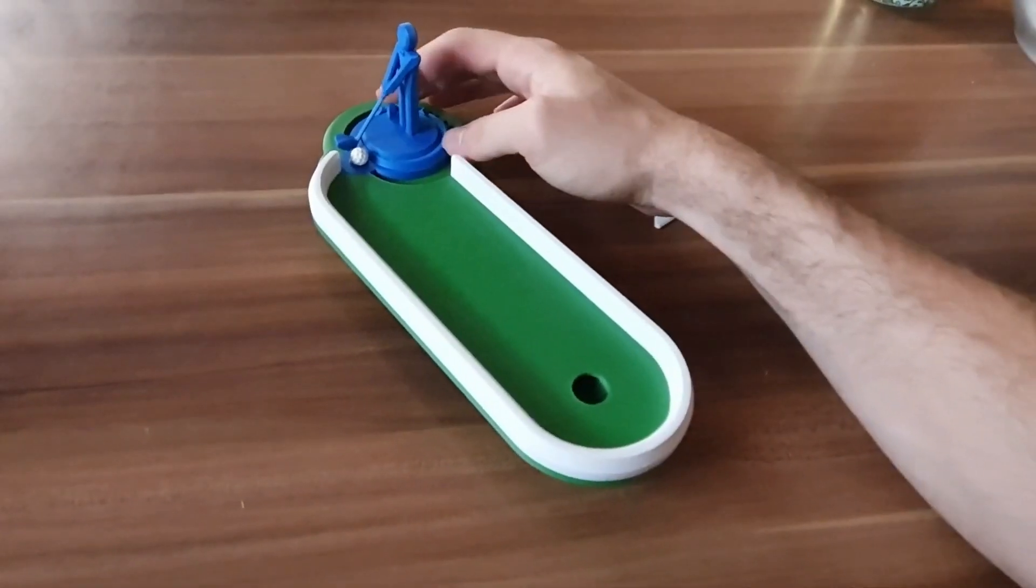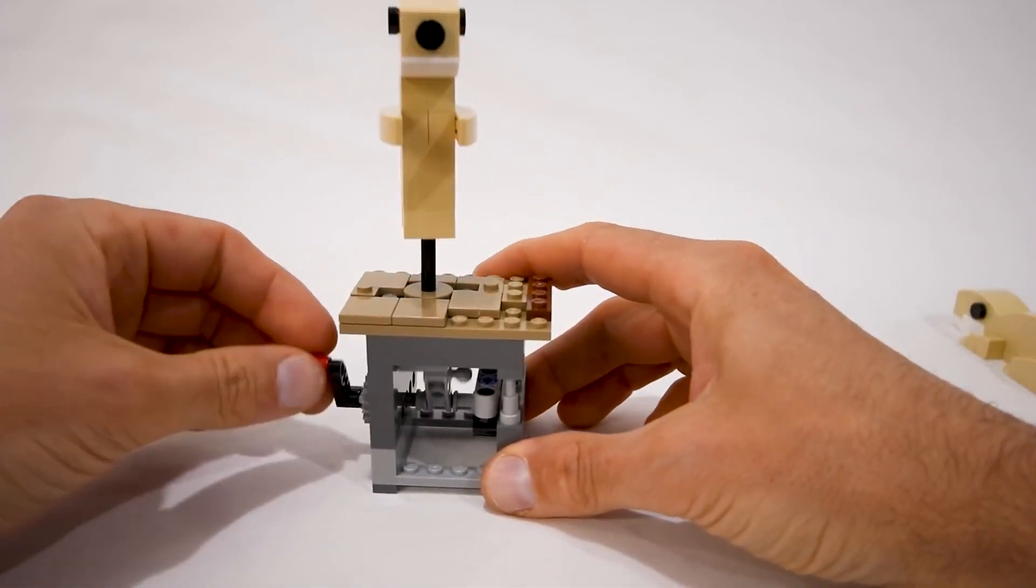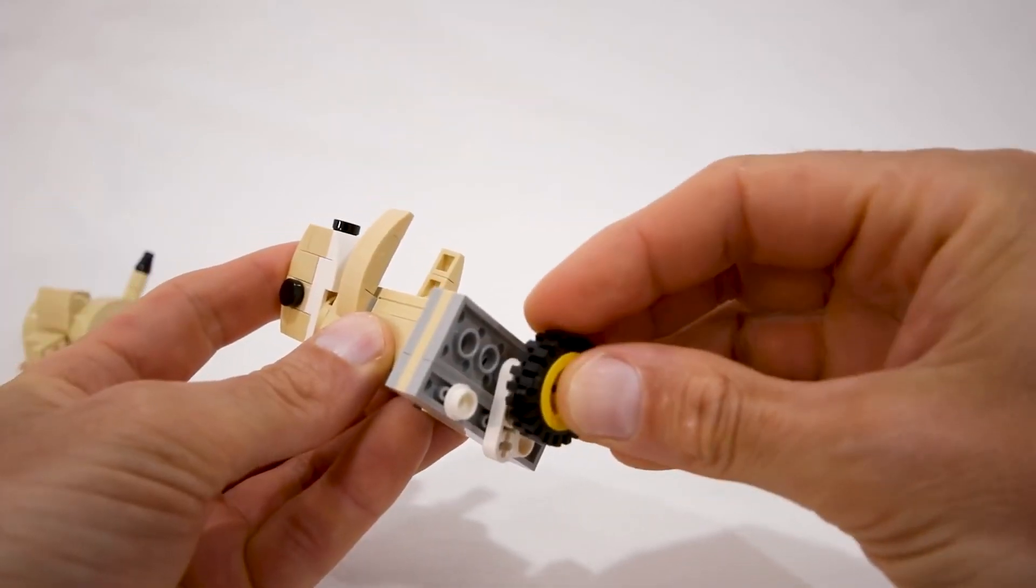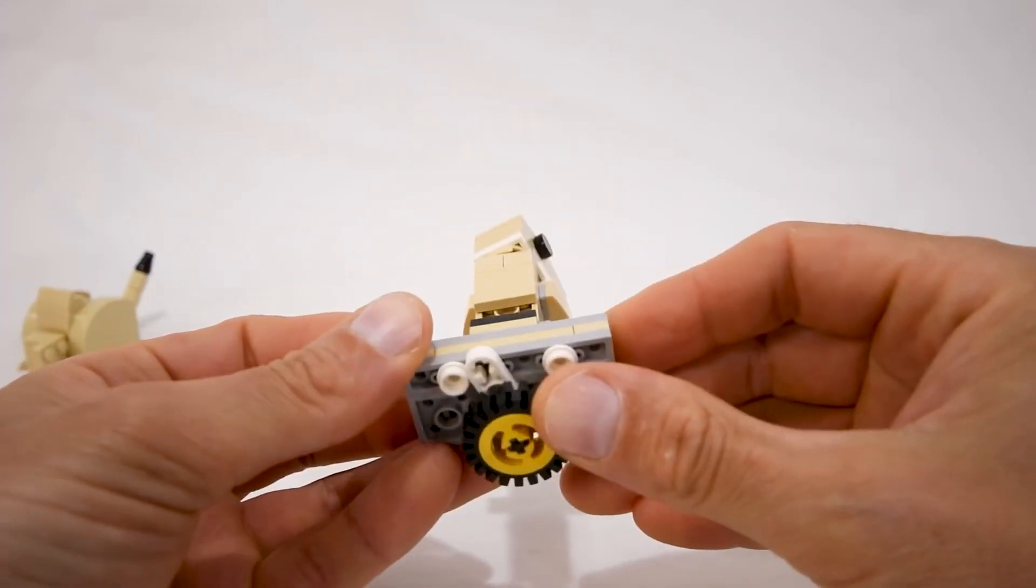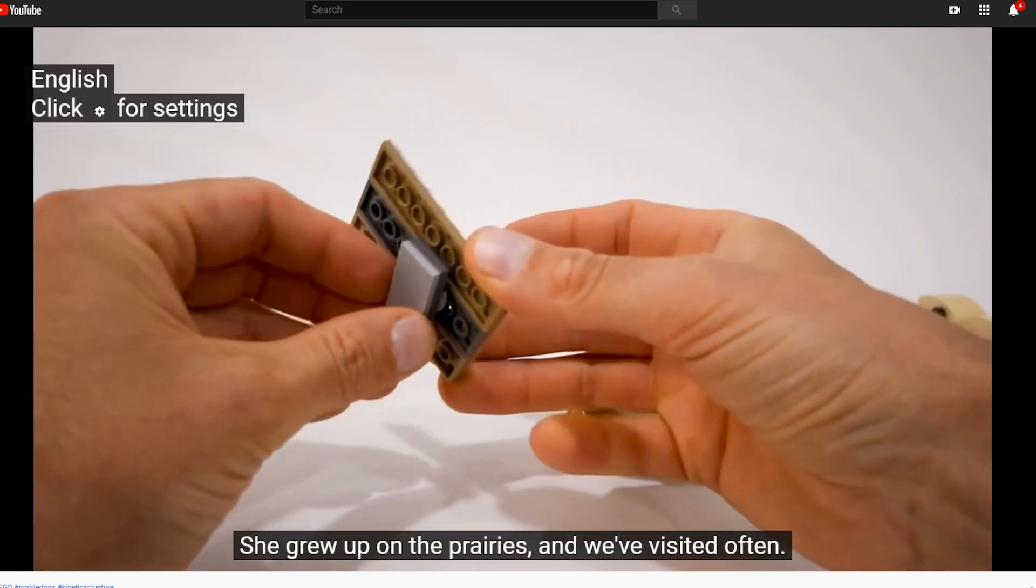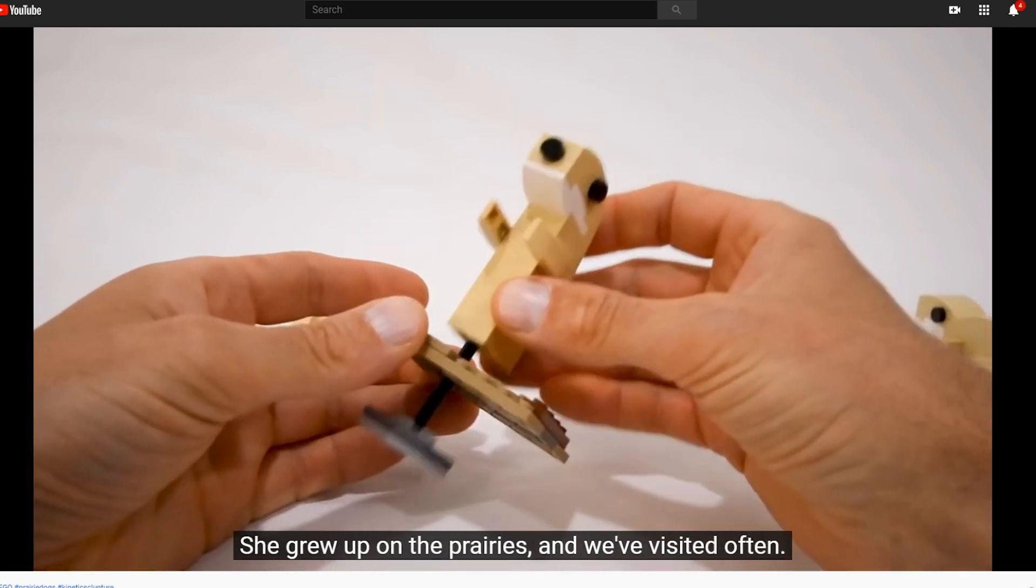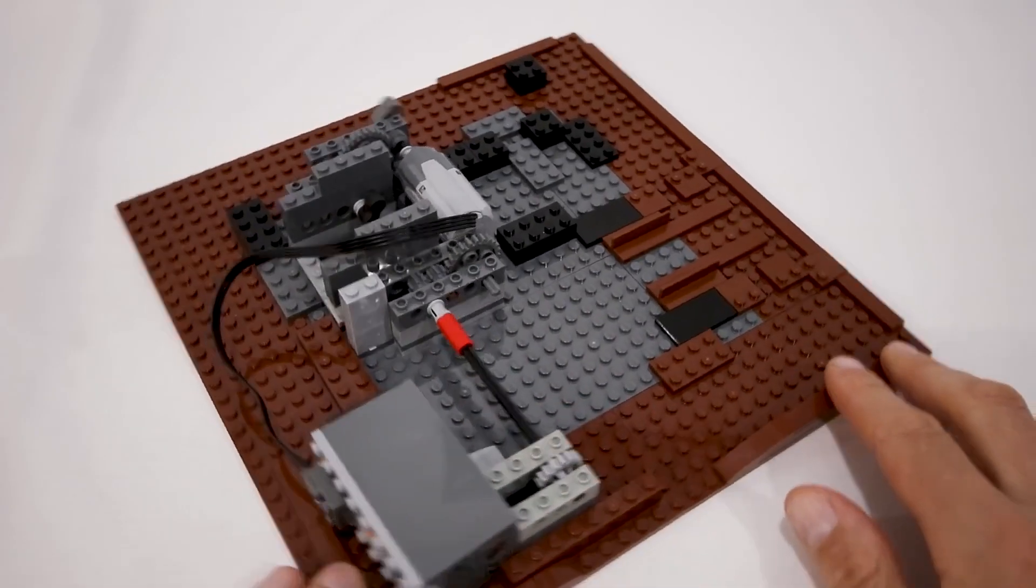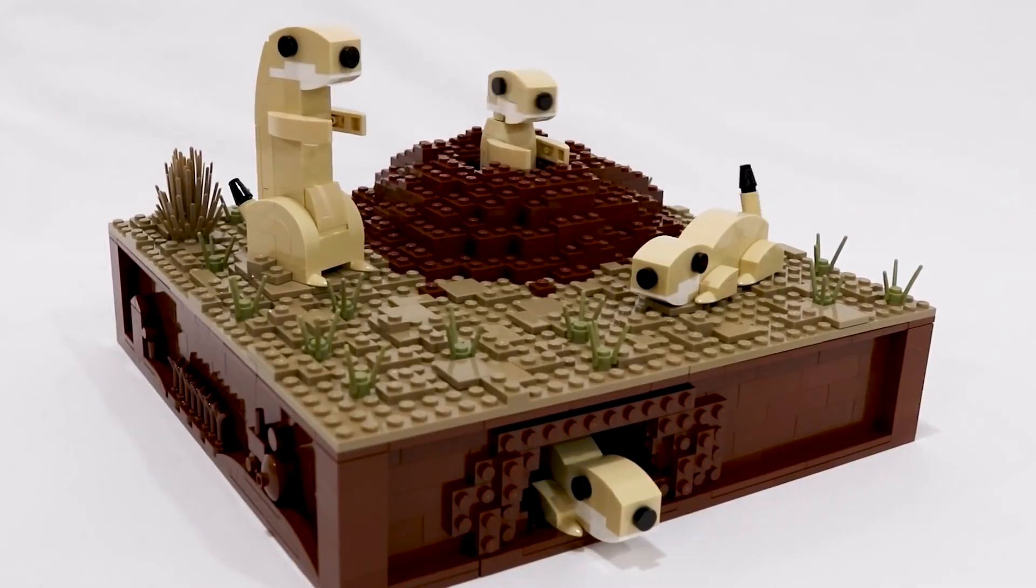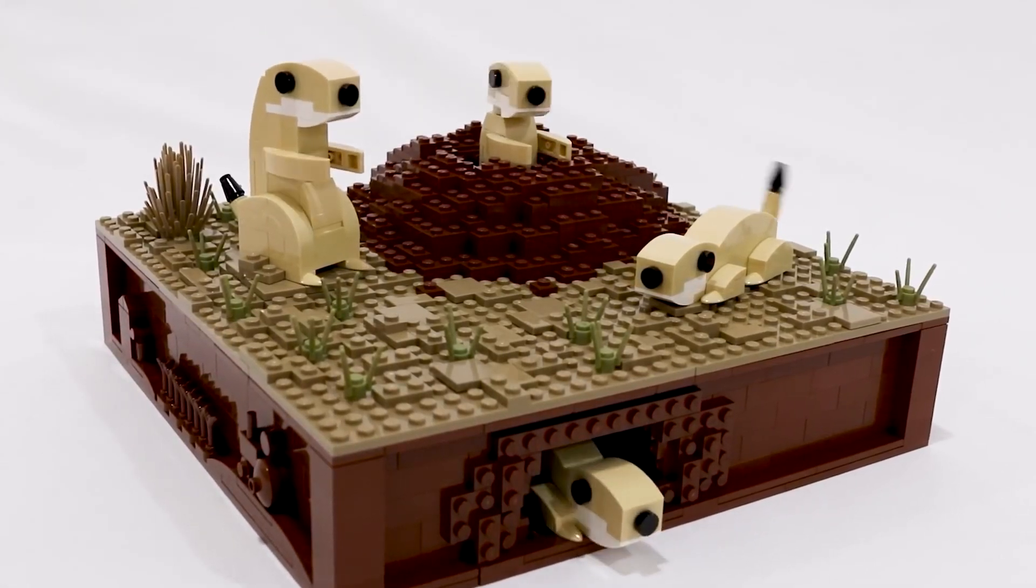Jason Allemann from JK Brickworks created this outstanding prairie dog automata in collaboration with his partner Crystal. Though the seven-minute video doesn't technically have any narration, if you turn on the closed captioning you actually get a description of what Jason is doing in each step to create the motion for each of the four prairie dogs. A single motor is driving all of the motion, which is incredible considering how different each of the prairie dogs behaves. The secret is in the gearing, but you'll need to watch the video to figure out how he's doing it.